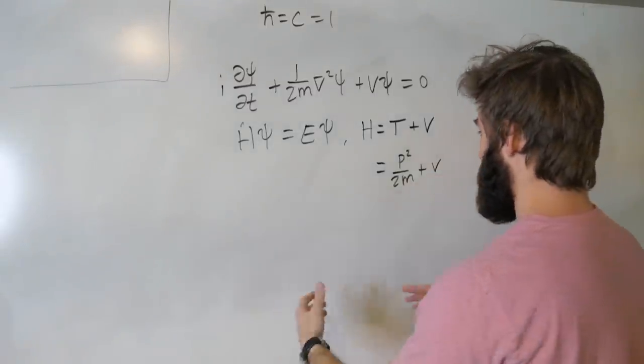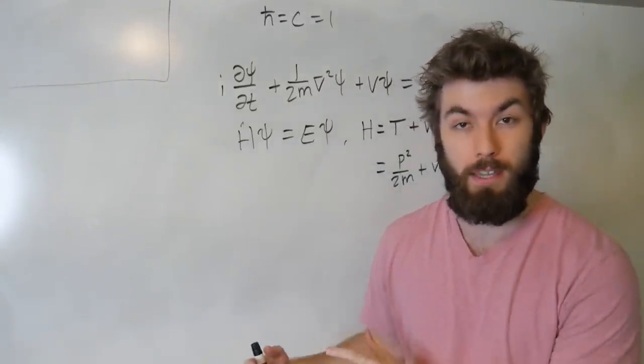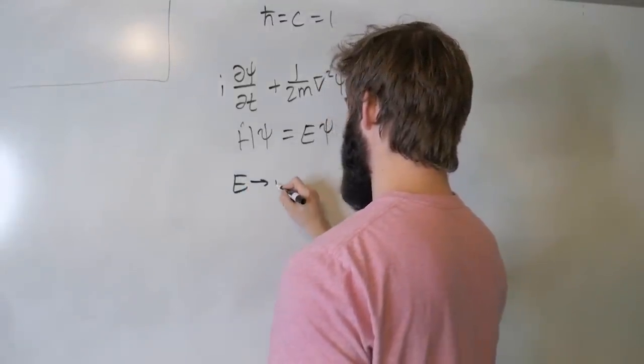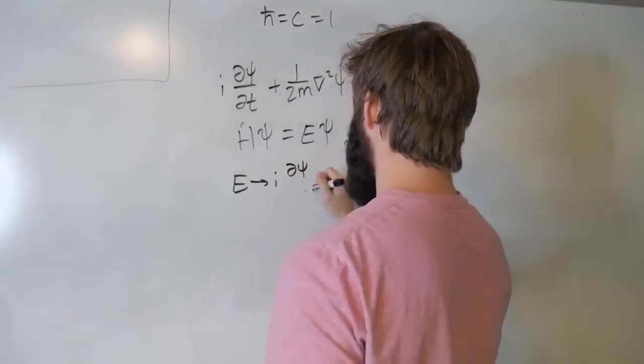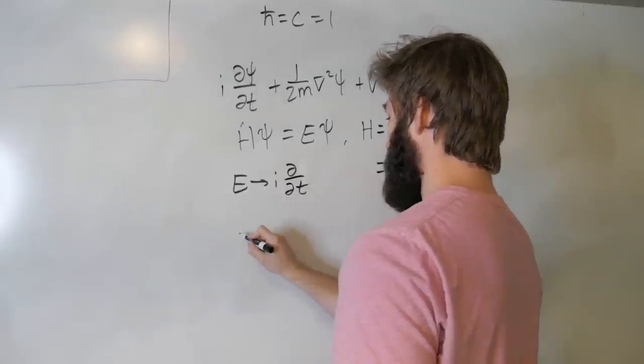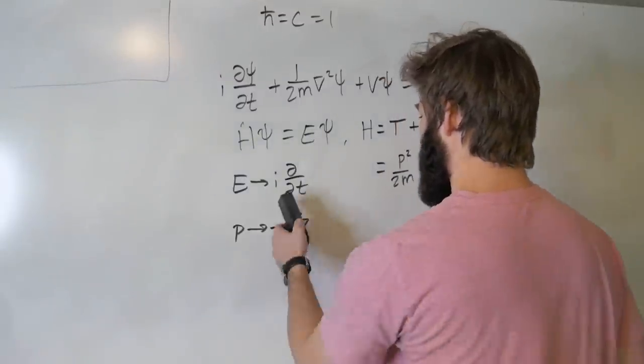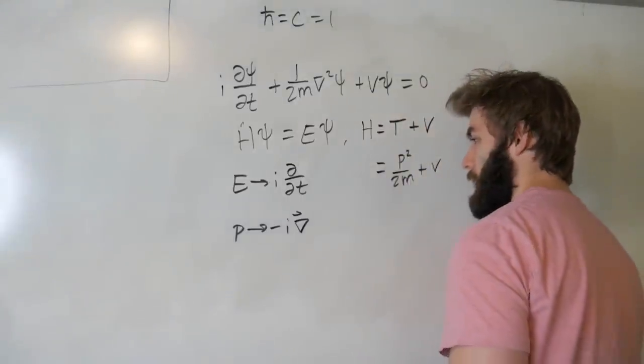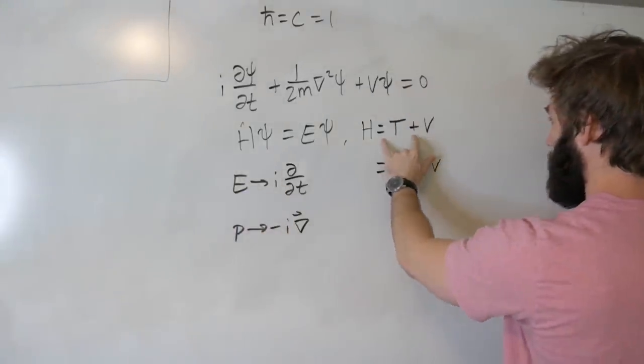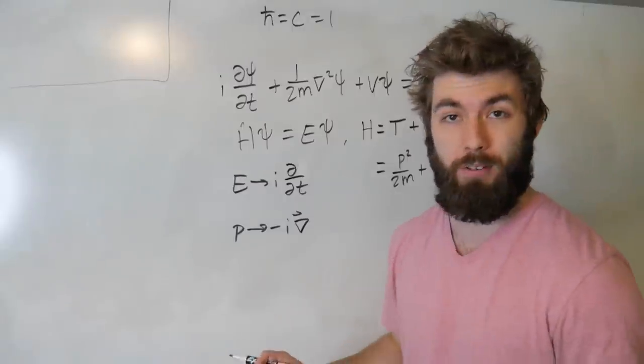And in order to turn this into a quantum mechanics problem, you start with the idea that you can replace classical observables with quantum mechanical operators. So energy becomes an operator by it becoming i d/dt. And likewise, momentum becomes an operator by it becoming minus i times the gradient. And again, normally there would be h-bars here, but we're not focusing on those right now. So classically, we've really just put this into the classical Hamiltonian and have it act on some wave function, and then we solve the equation. It basically turns this into an eigenvalue problem.